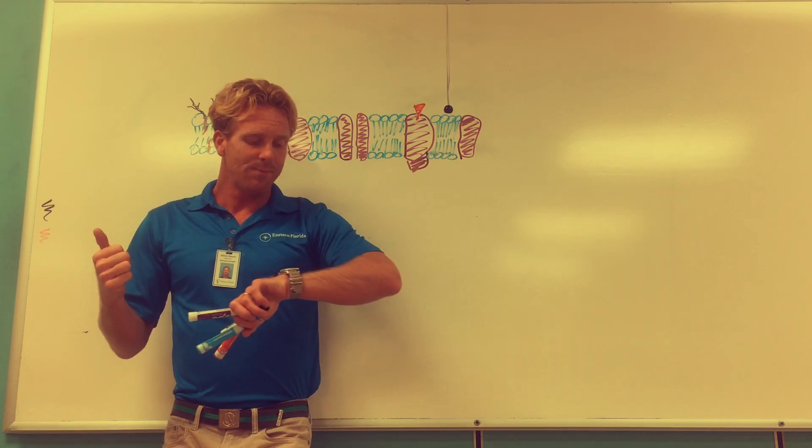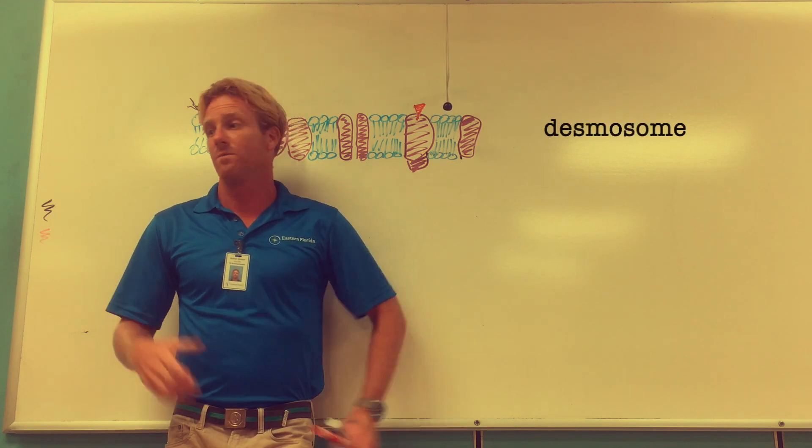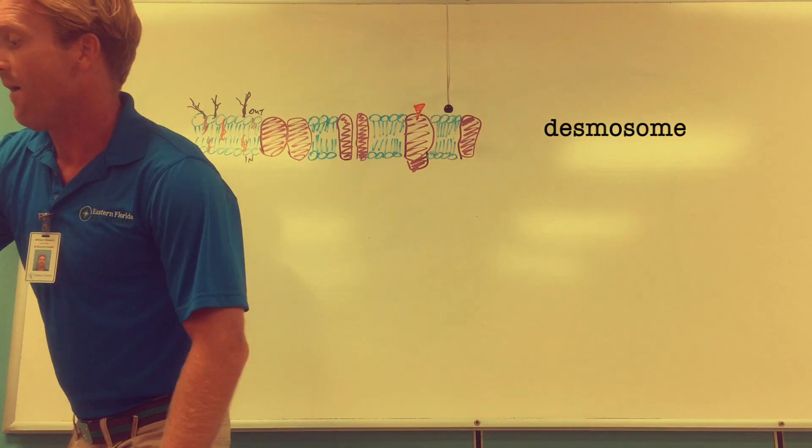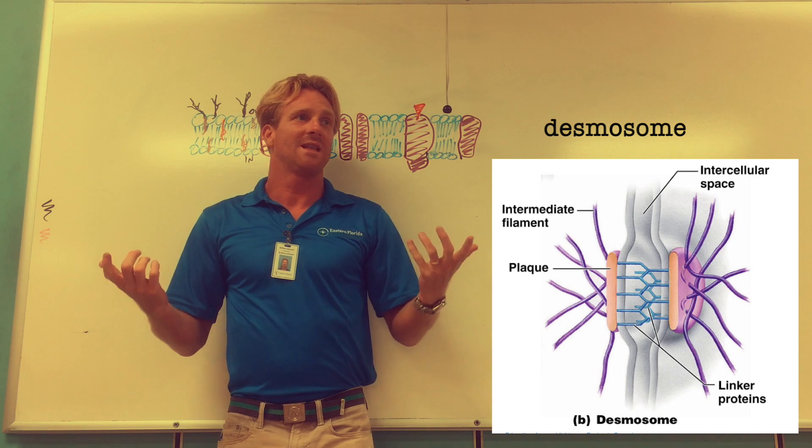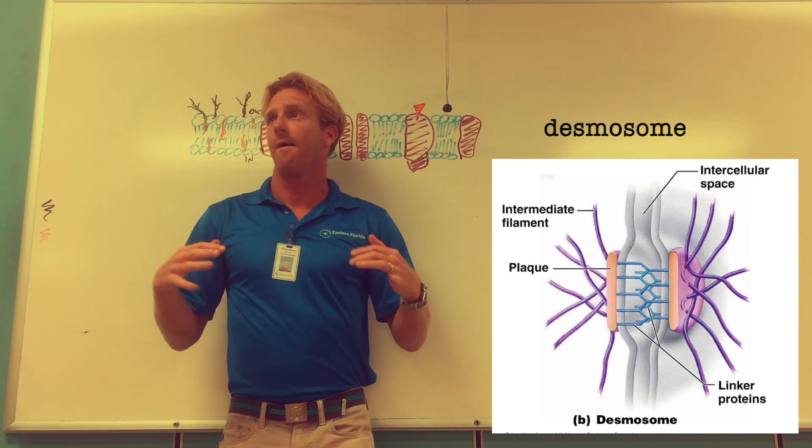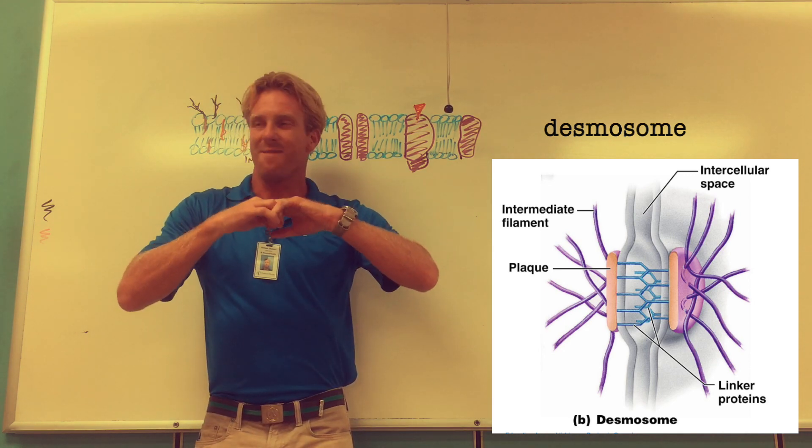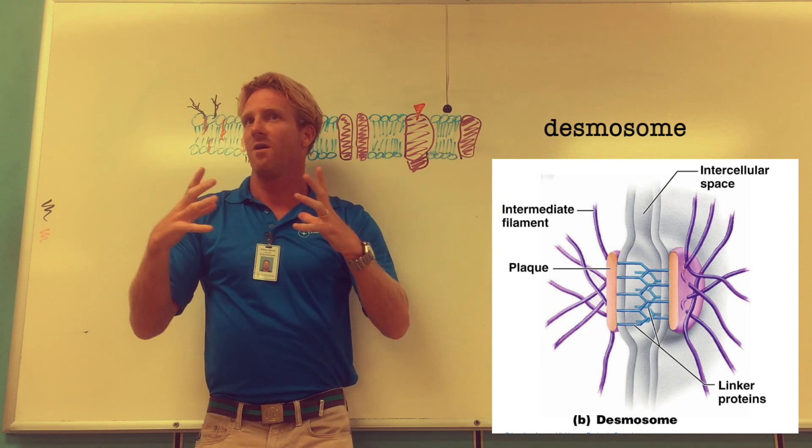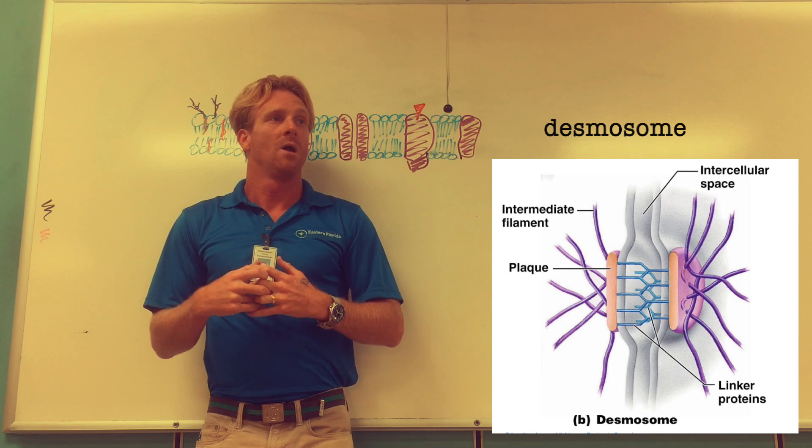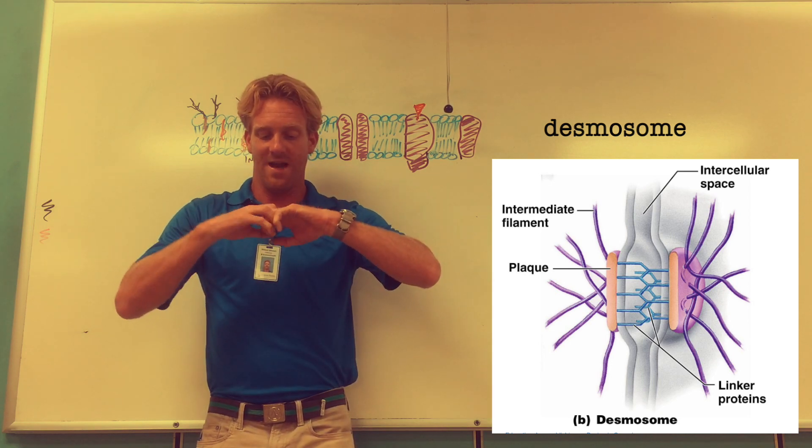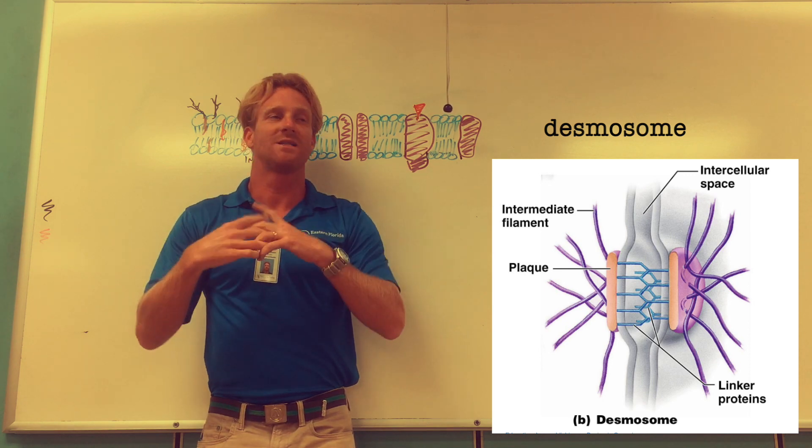A second type of union made by proteins is called a desmosome. Think of these as proteins that anchor neighboring cells together so they don't pull apart. You'll find this a lot in cardiac muscle cells. Cardiac muscle cells are arranged in series and when they contract they pull on each other, and that allows the heart to beat and squeeze the blood out of the ventricles and atria. You don't want those neighboring cardiac muscle cells to pull apart, so we need to anchor them tightly together. That's done with the desmosome.